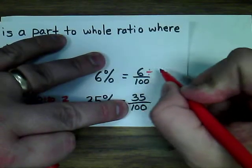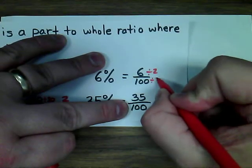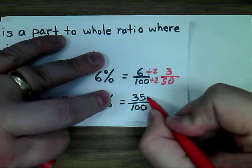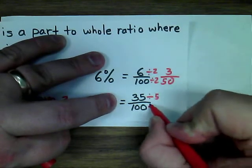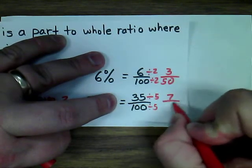By dividing both of these by 2, you'd get 3 over 50. And by dividing both of these by 5, you'd get 7 over 20.